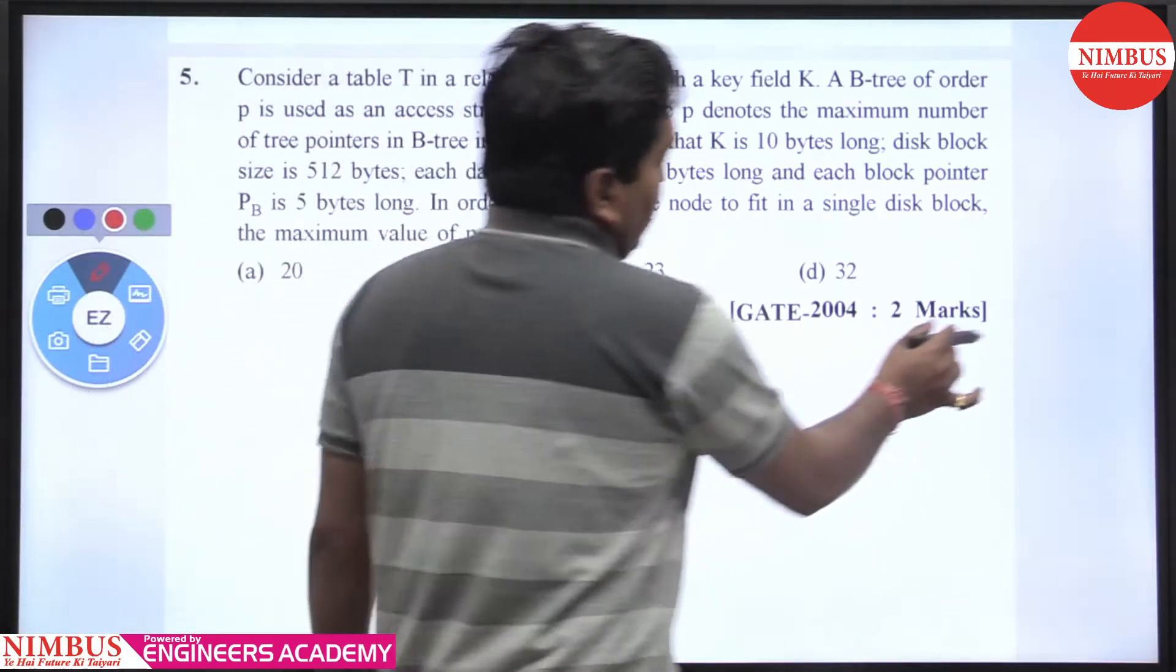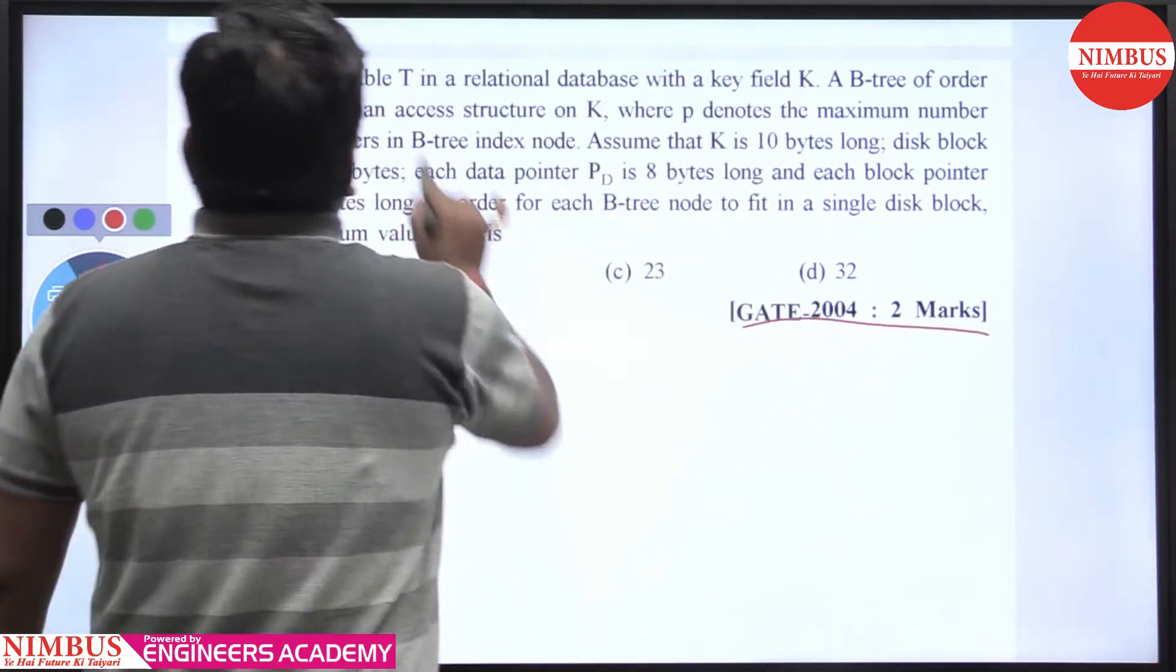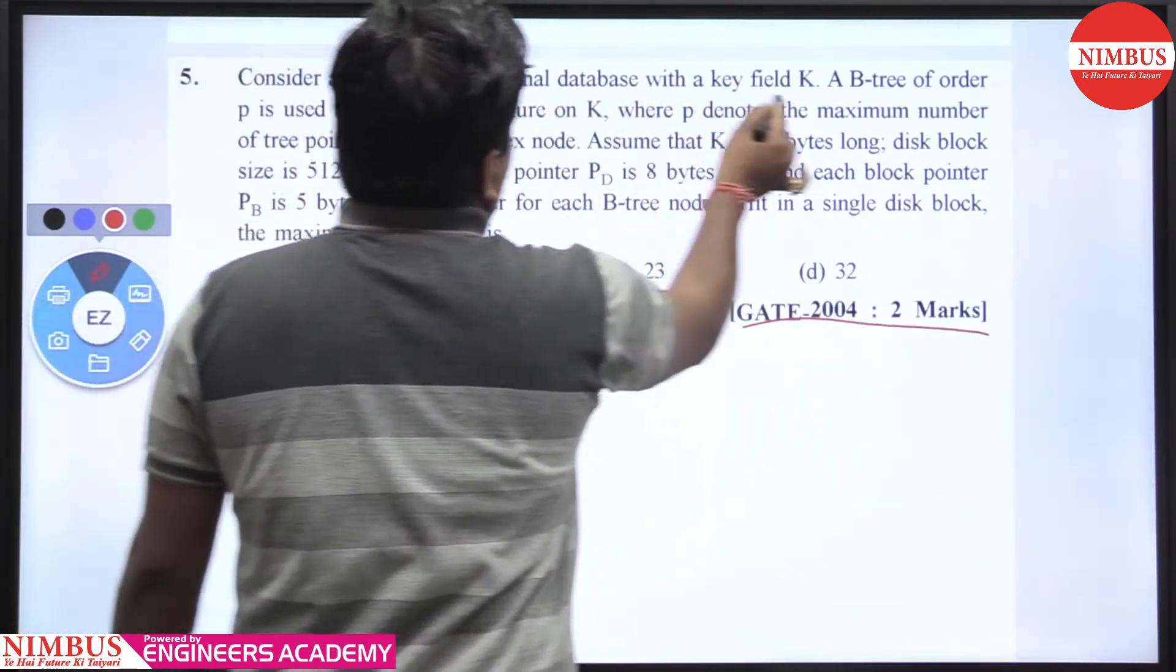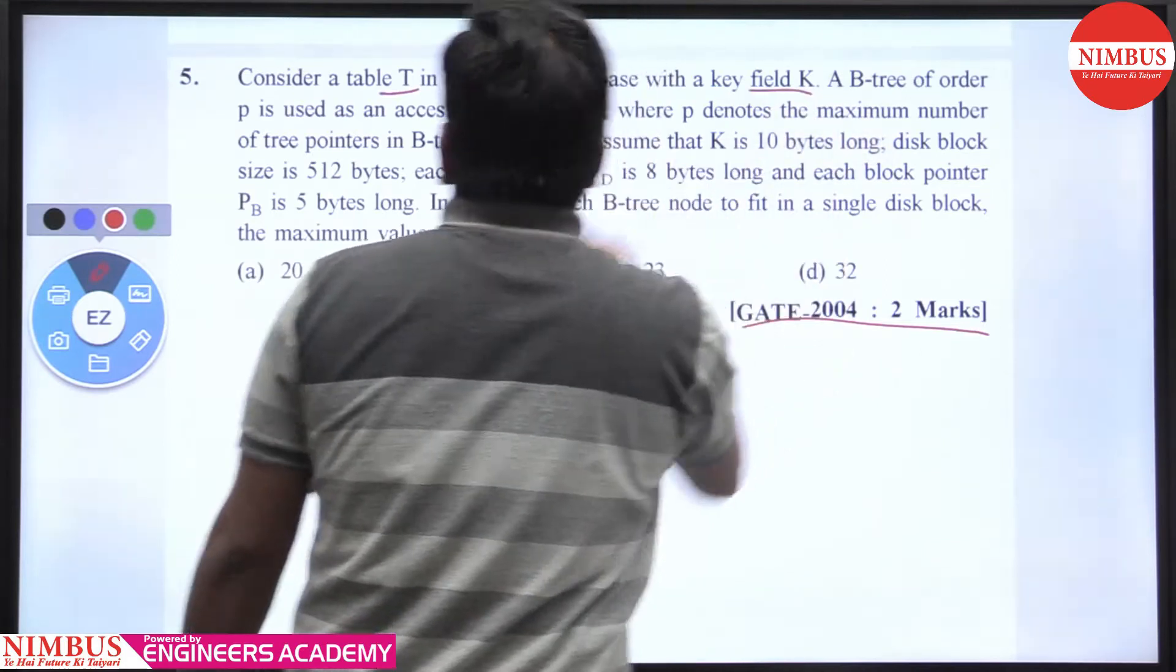Hello students, this is a question from GATE 2004, two marks. Consider a table T in a relational database with key K. This is a B-tree.